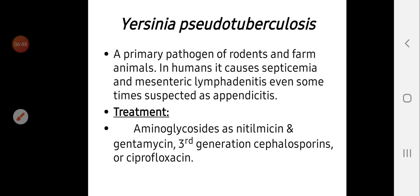The last member of Yersinia is Yersinia pseudotuberculosis, a primary pathogen of rodents and farm animals. In humans it causes septicemia and mesenteric lymphadenitis, which may sometimes be confused with appendicitis. Treatment is with aminoglycosides, third-generation cephalosporins, or ciprofloxacin. This concludes the genus Yersinia.